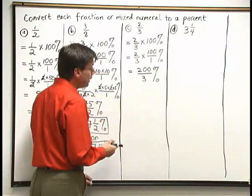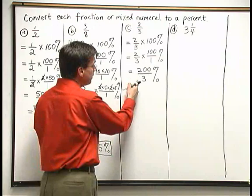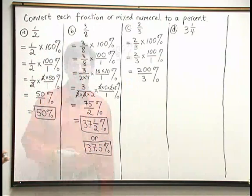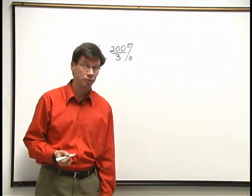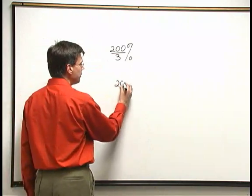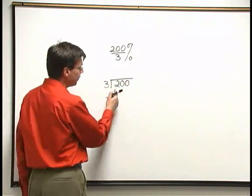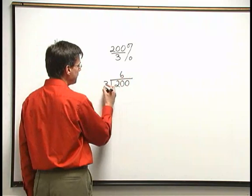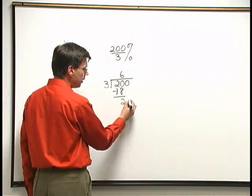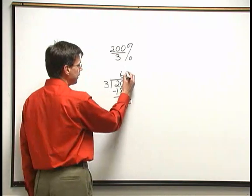Again, we have an improper fraction with a larger number on top. So let's go off on the side and divide this out so that we can convert it to mixed numeral form. So we have 200 thirds percent that we want to convert to a mixed numeral. Let's go ahead and divide 200 divided by 3. 3 doesn't go into 2, but 3 goes into 20 6 times. 6 times 3 is 18. 20 minus 18 is 2. Bring down the last 0 on the end now.